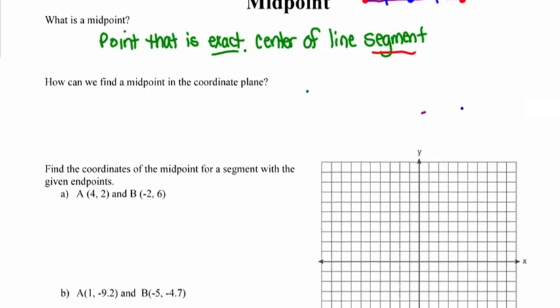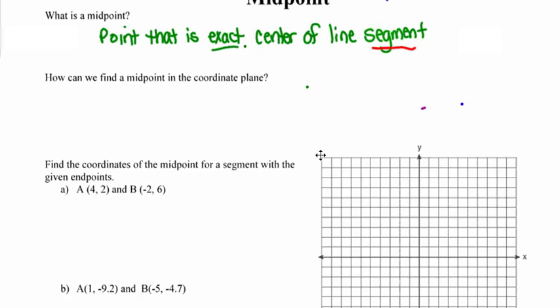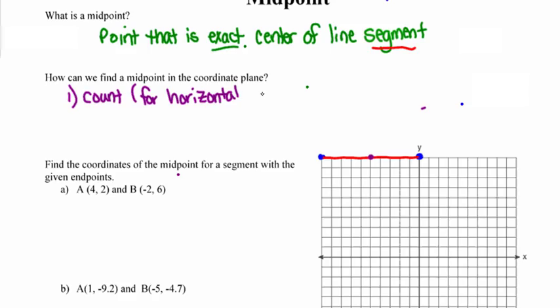So how can we find a midpoint if we know the endpoints of our line segment? If the line segment is perfectly horizontal and exactly 10 units long, I can count on the coordinate grid to find that the midpoint divides the segment into two pieces each 5 units long. So my first option is: if the line segment is horizontal or vertical, count it. However, this only works when the line segments are horizontal or vertical.